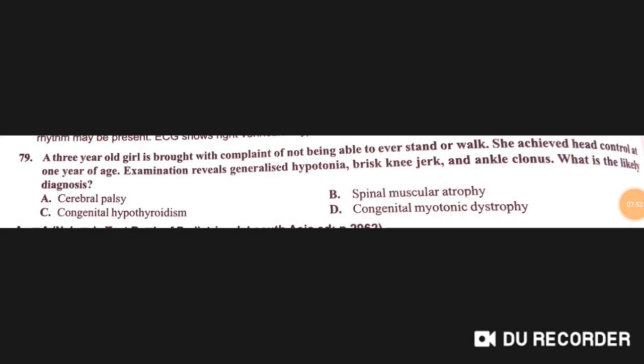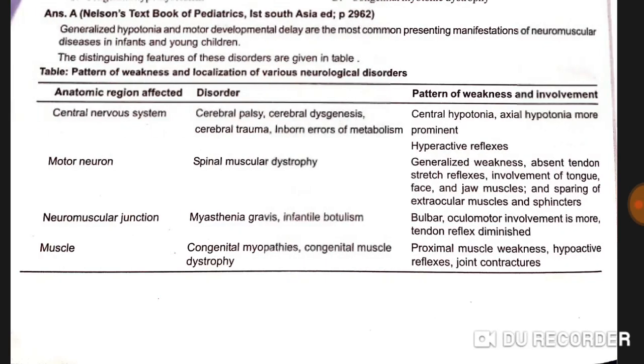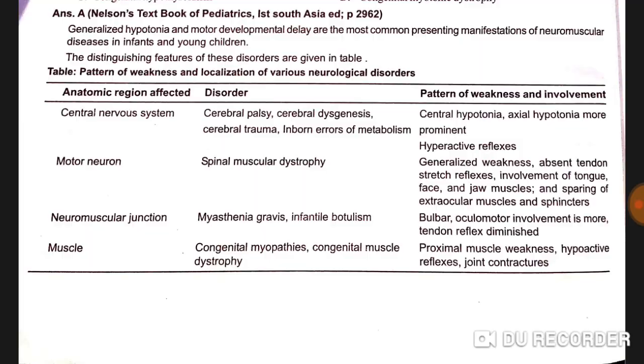A three-year-old girl presents with inability to stand or walk. She achieved head control at one year of age. Examination reveals generalized hypotonia, brisk knee jerks, and ankle clonus. The likely diagnosis is cerebral palsy — option A is correct.